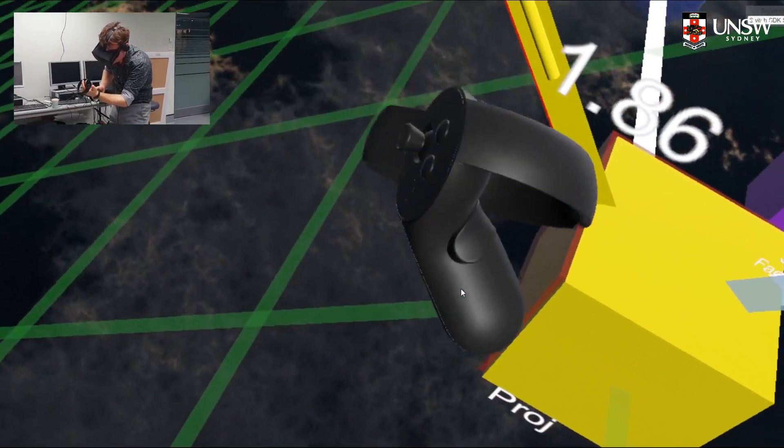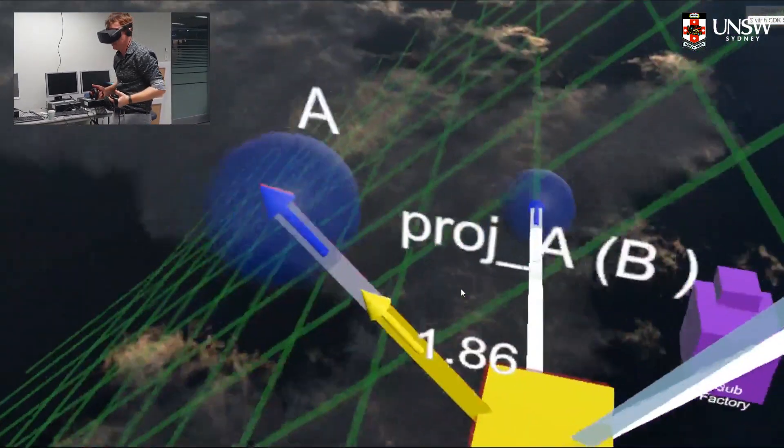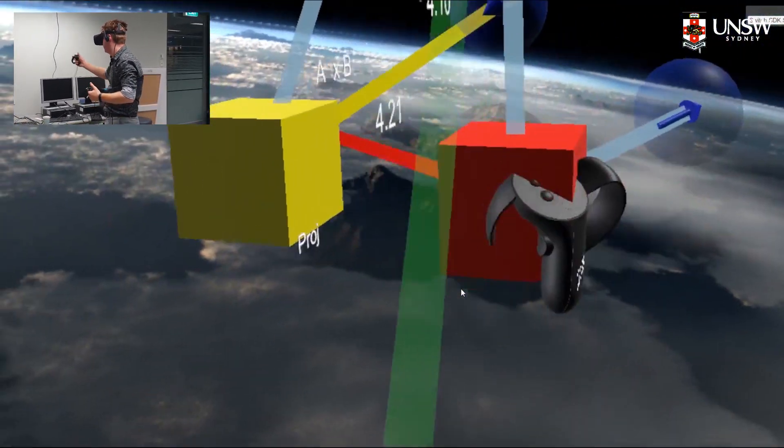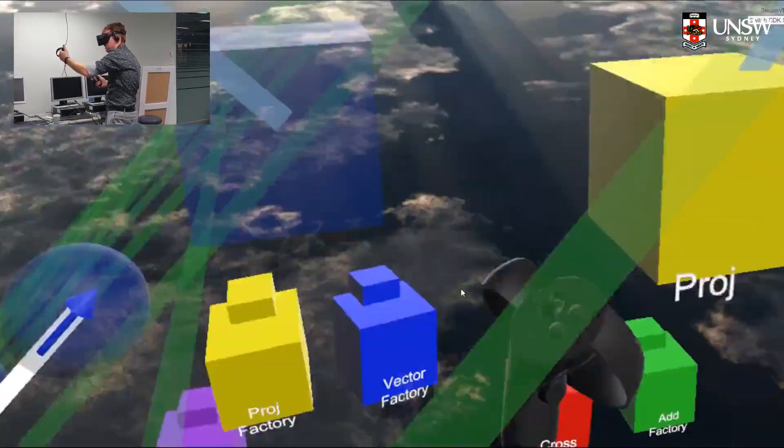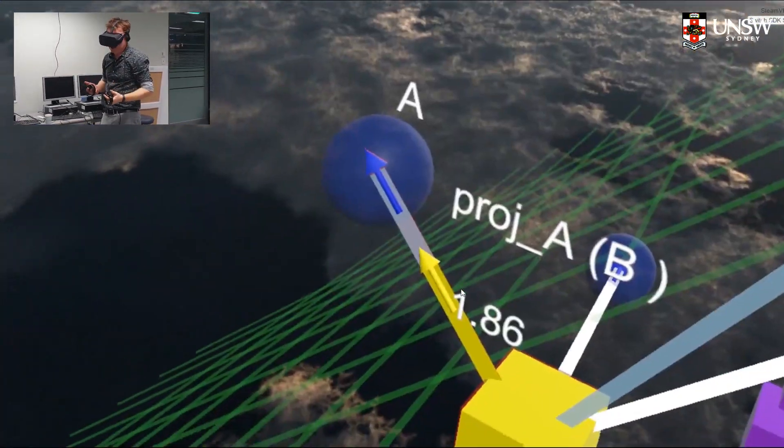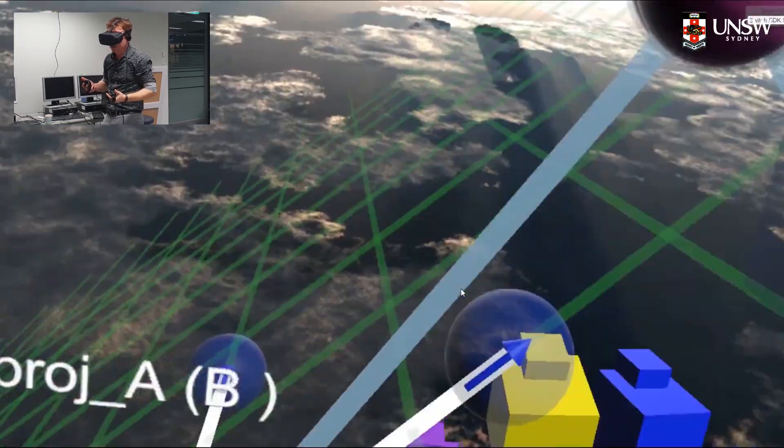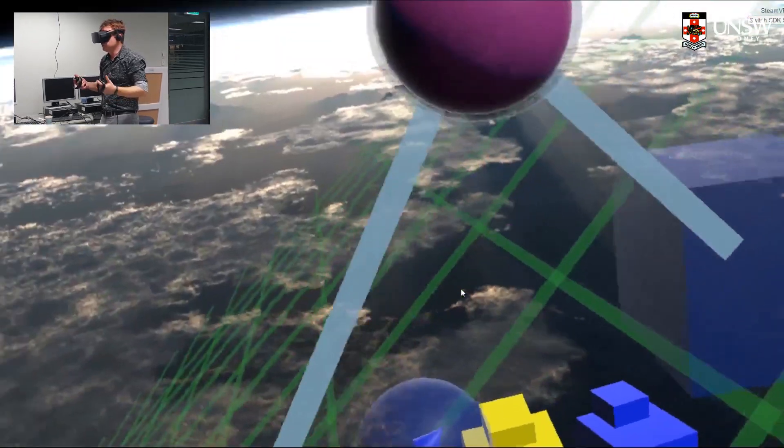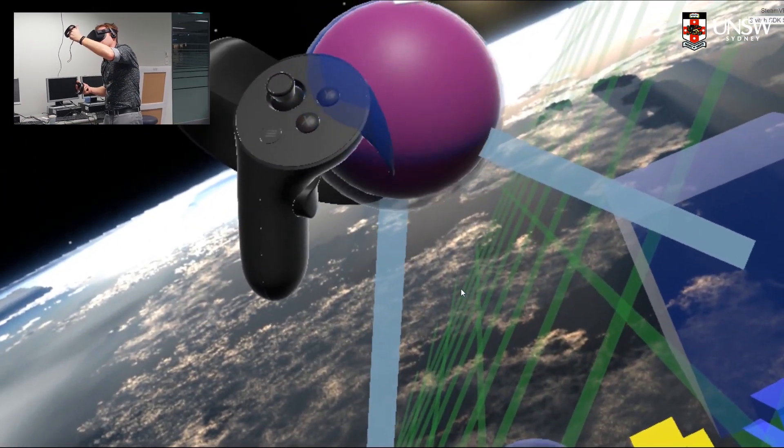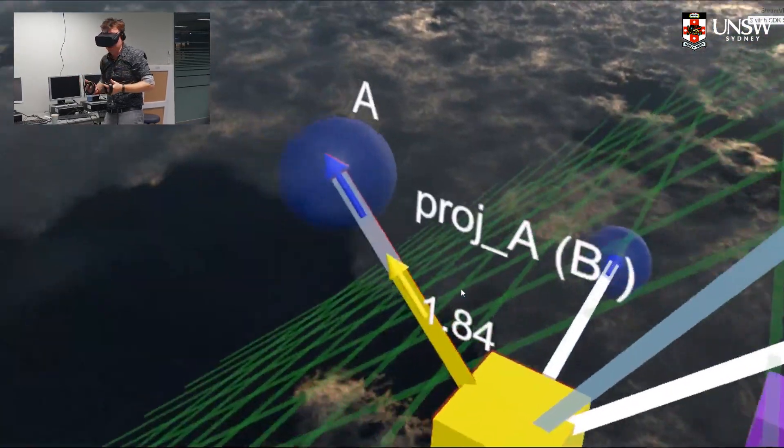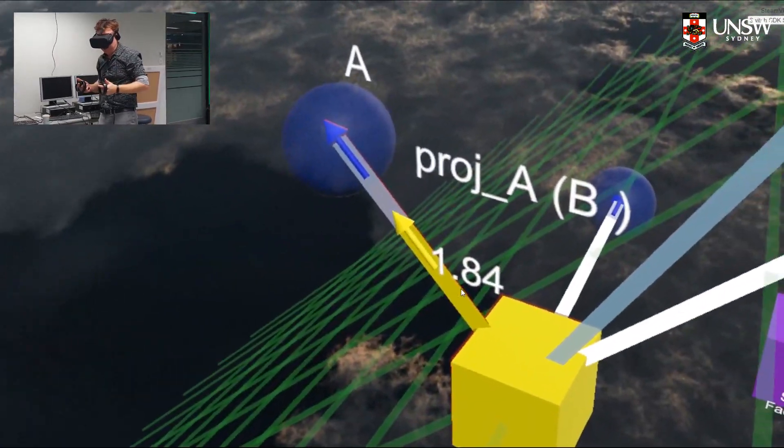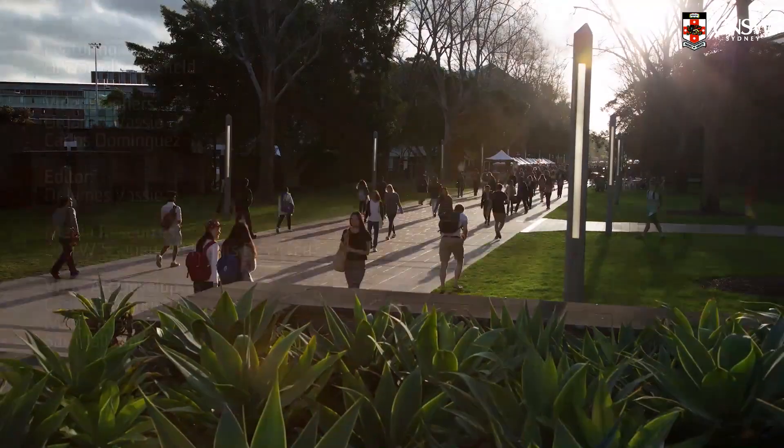So it's really just using these elementary operations, the cross product and the projection, and string them together in a particular way which will allow you to answer some non-trivial questions in vector geometry, such as finding the shortest distance between a point and a plane.